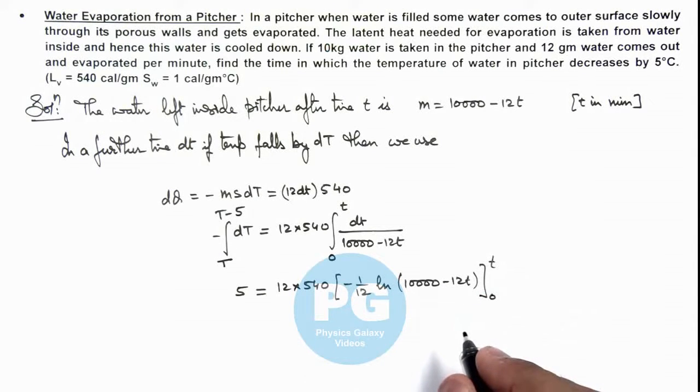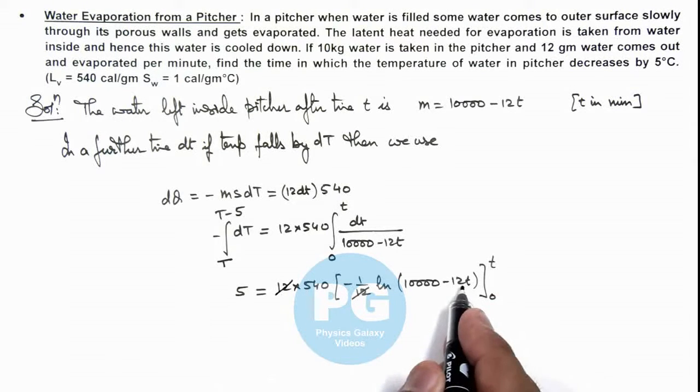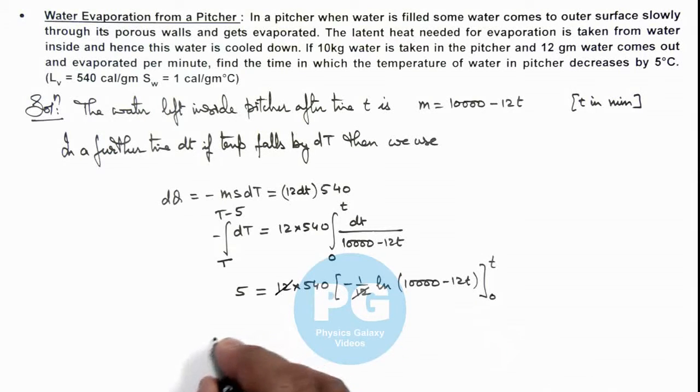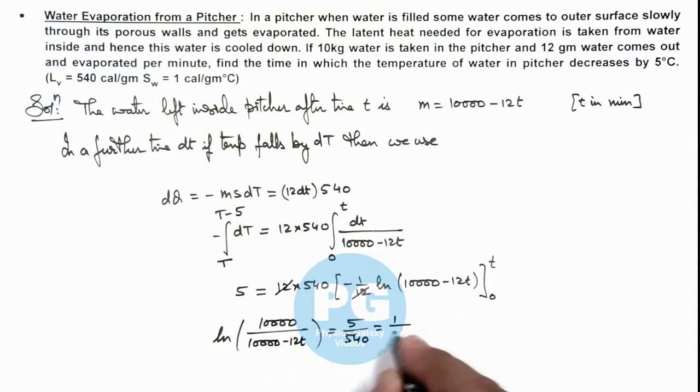And in this situation if we further analyze, this relation will give us here this 12 gets cancelled out and on simplifying and substituting the values this will give us ln of 10,000 divided by 10,000 minus 12t is equal to 5 by 540 which is equal to 1 by 108.